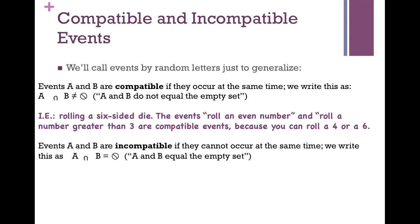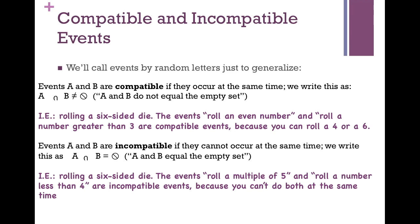On the other hand, if events A and B are incompatible, it's because they cannot occur at the same time. We write this as A and B equal to the empty set. For example, rolling a six-sided die with events: roll a multiple of five, and roll a number less than four. The only multiple of five on a die is five, and that is not less than four. So because you cannot get a multiple of five and a number less than four at the same time, these are incompatible events.